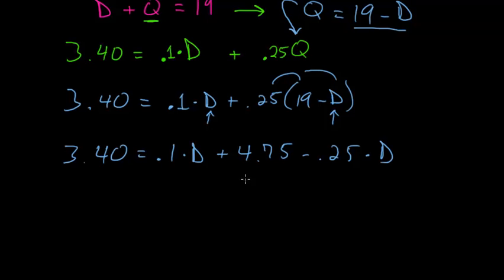We can subtract 4.75 from each side, so the left side now has negative 1.35. On the right side, we can combine two quantities of dimes. So 0.1d minus 0.25d leaves us with negative 0.15 times d.